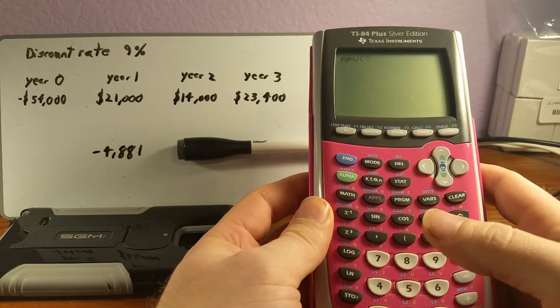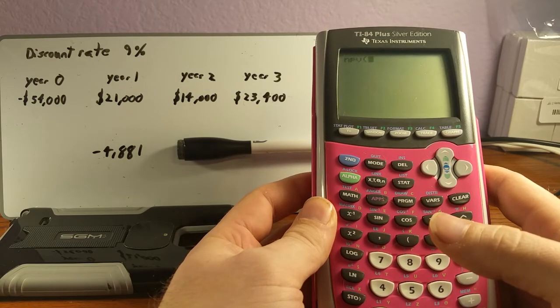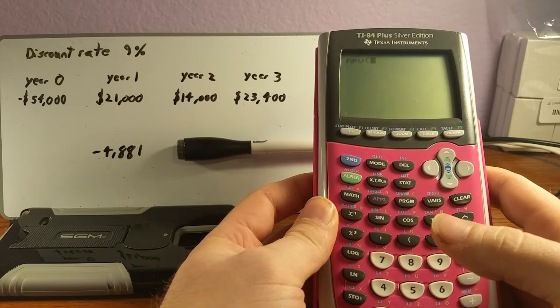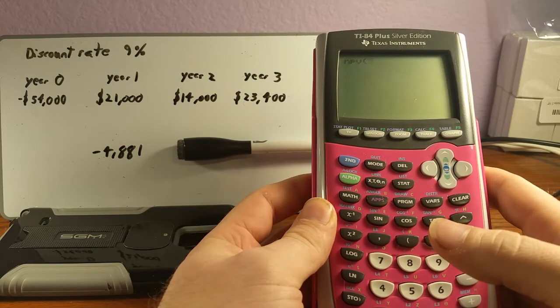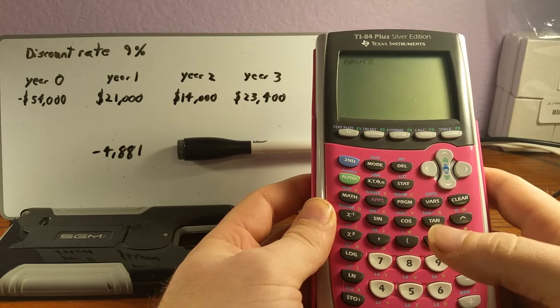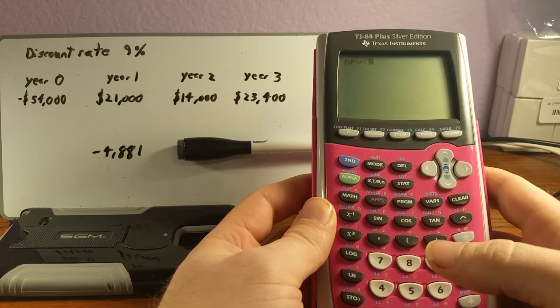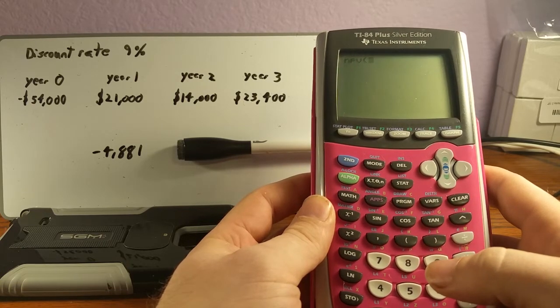So the only difference here is that instead of putting in our $54,000 for how much we're paying out on the project, we're just going to put in zero. And then once we get the answer from all of this, from the net present value formula with that zero plugged in, we're going to divide by the $54,000 instead. So let's go ahead and get that started.